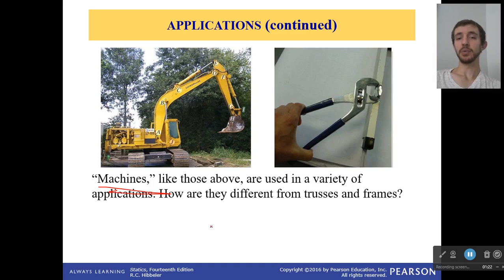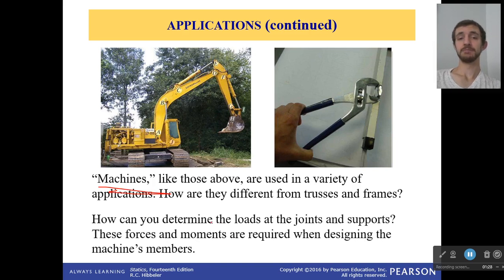So machines are used in a variety of applications. Now how do you think they're different from trusses and frames? The big thing about machines is they are increasing the work you're doing, or at least they're increasing the effectiveness. For example, right here, I am gripping hard, and that is putting a lot more force right here on this bolt, perhaps.